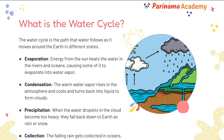What is the water cycle? The water cycle is the path that water follows as it moves around the earth in different states. The first step is evaporation — energy from the sun heats the water in the rivers and oceans, causing some of it to evaporate into water vapor. The second step is condensation — the warm water vapor rises in the atmosphere and cools, turning back into liquid to form clouds. The third step is precipitation — when the water droplets in the cloud become too heavy, they fall back down to earth as rain or snow. And the final step is collection — the falling rain gets collected back in the oceans.